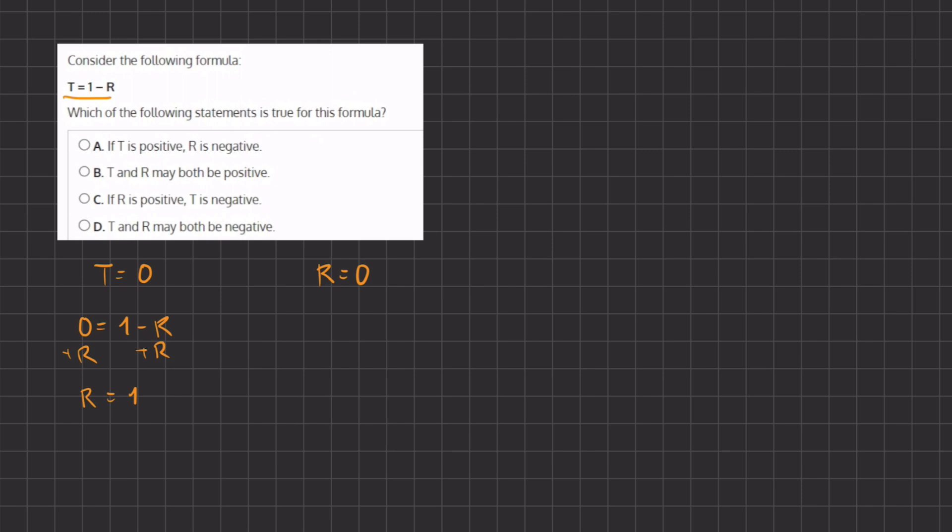Our second point is when r equals 0, so if we plug in 0, we have t equals 1 minus 0, so t equals 1.